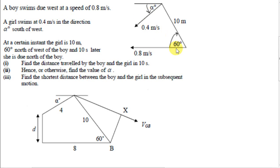A boy swims due west at a speed of 0.8 meters per second. A girl swims at 0.4 meters per second in the direction alpha degrees south of west. At a certain instant, the girl is 10 meters 60 degrees north of west of the boy, and 10 seconds later, she is due north of the boy.